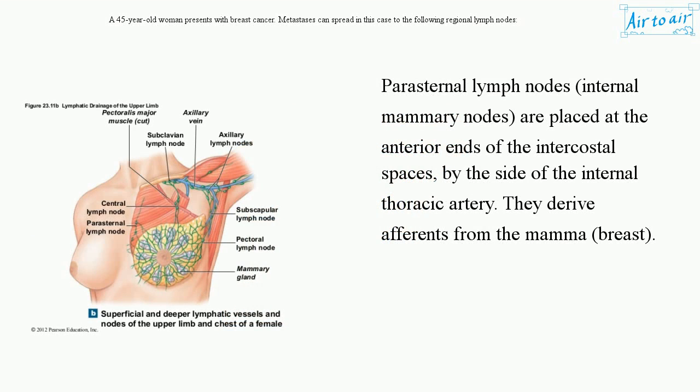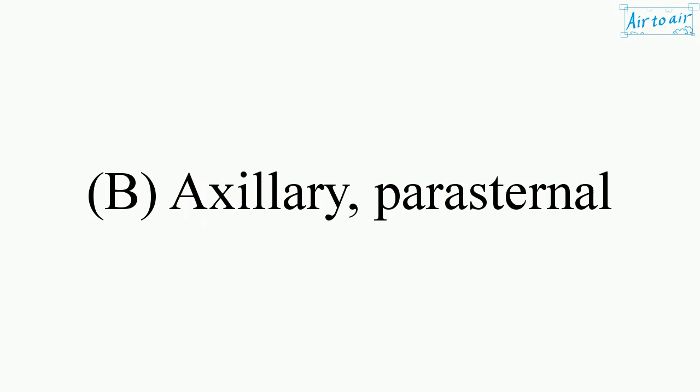Parasternal lymph nodes, or internal mammary nodes, are placed at the anterior ends of the intercostal spaces by the side of the internal thoracic artery. They derive afferents from the breast. The answer is B. Axillary, parasternal.